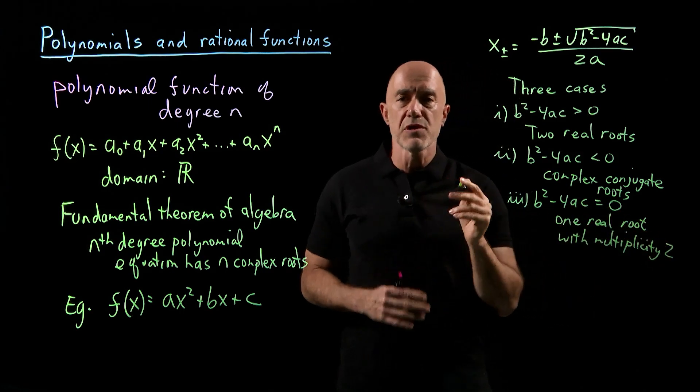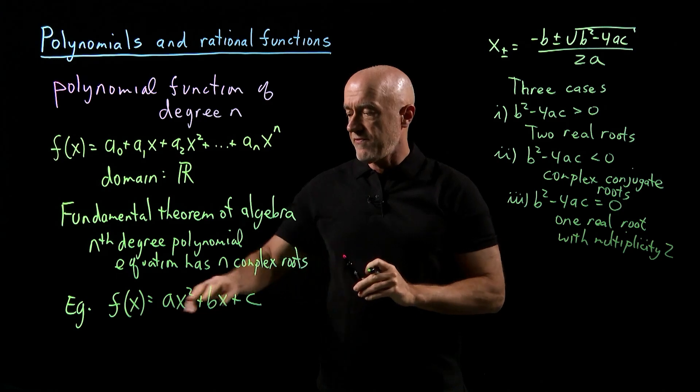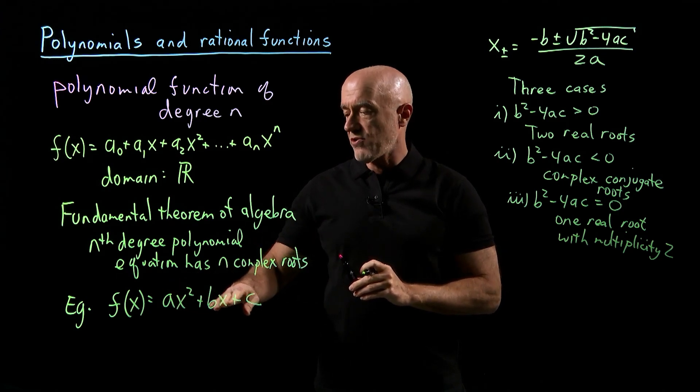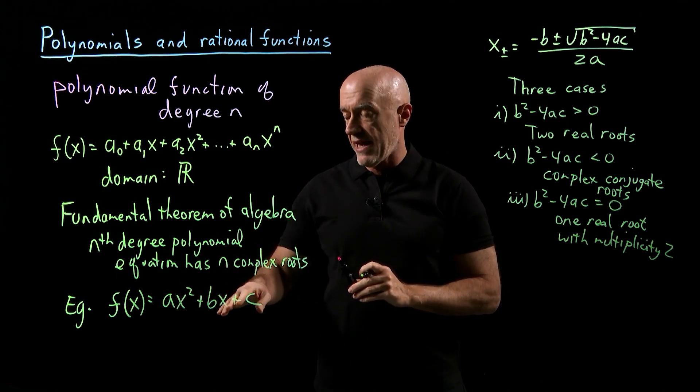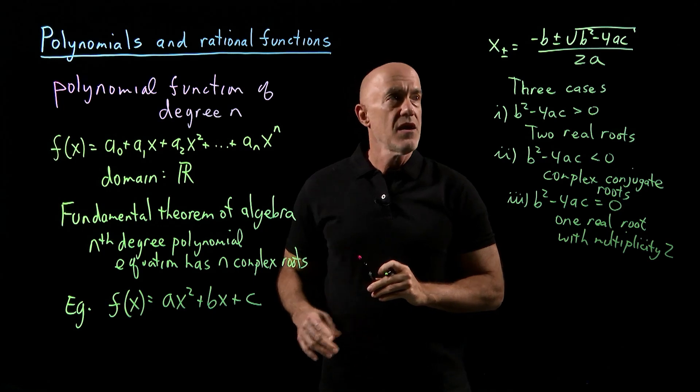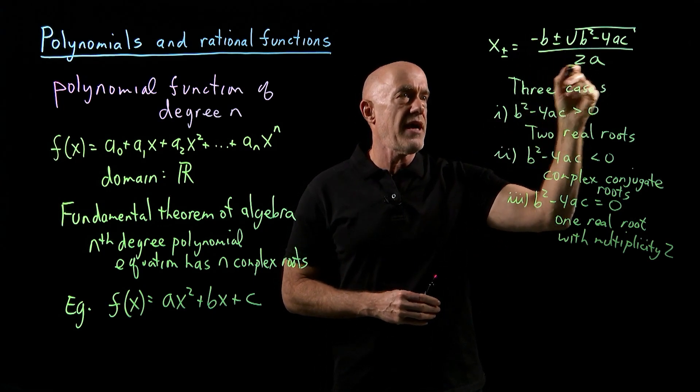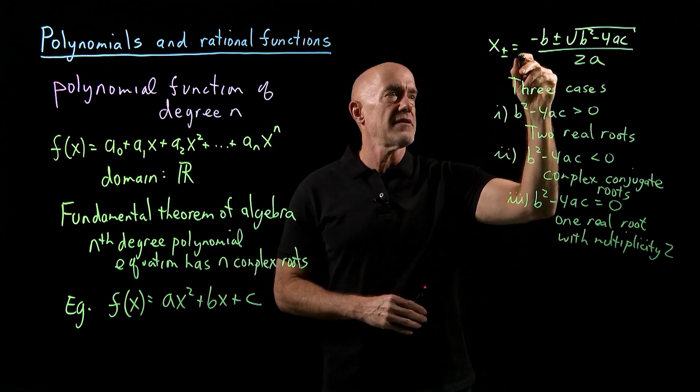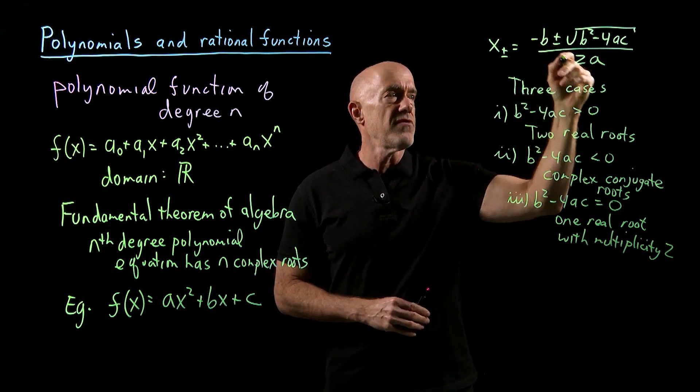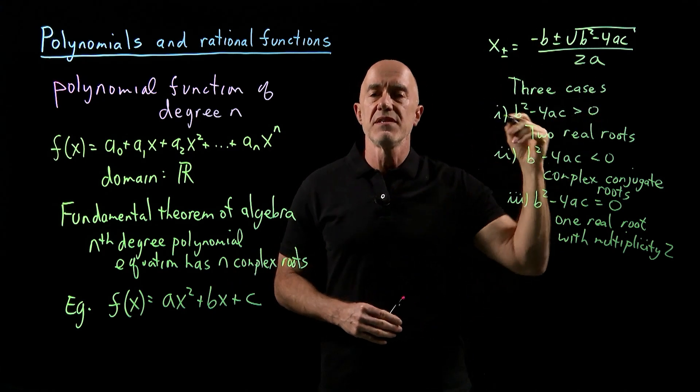And what do we mean by multiplicity 2? It means if we factor the quadratic ax² plus bx plus c, we would get a factor. The root is negative b over 2a, so it should factor as (x plus b over 2a), and it will be squared.